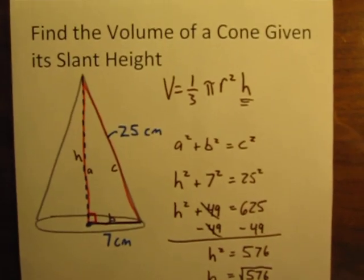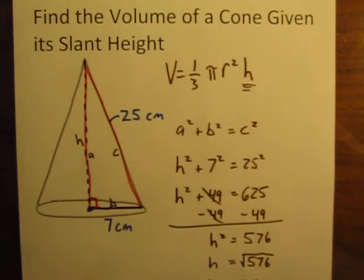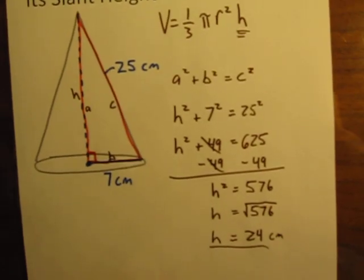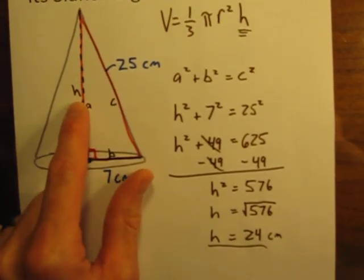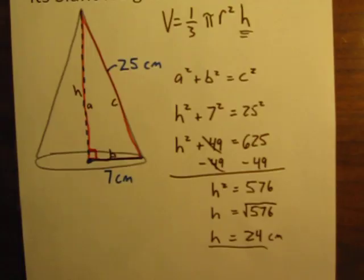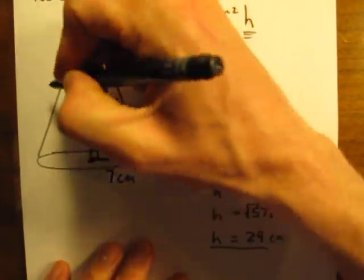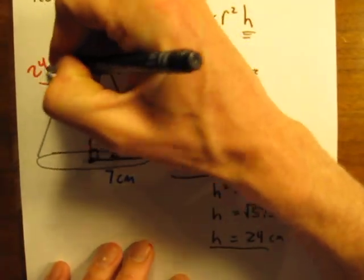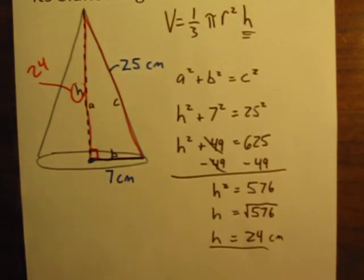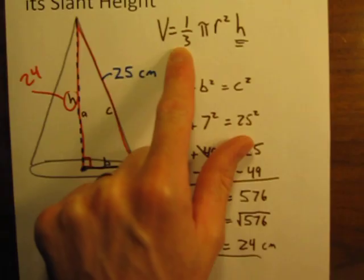all of this that we've done so far is just getting us what that, I'm sorry, what the actual height there, the height of our cone is 24. At this point, we're finally ready to use our volume formula that we started with.